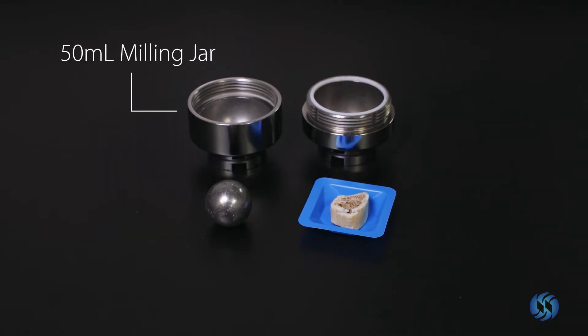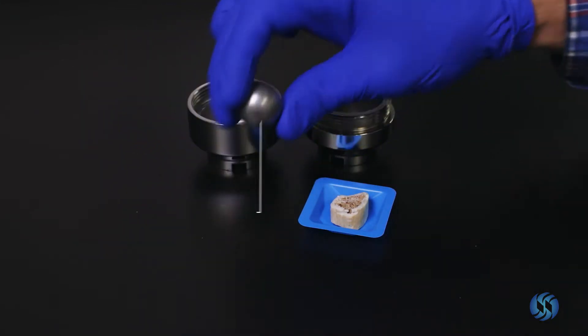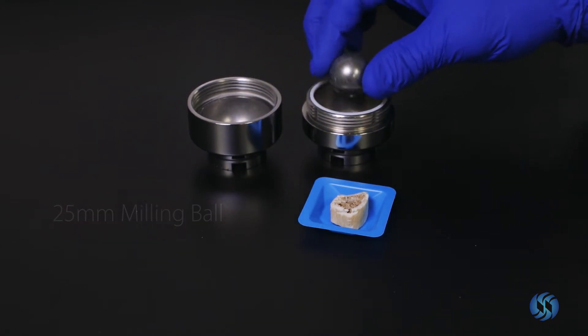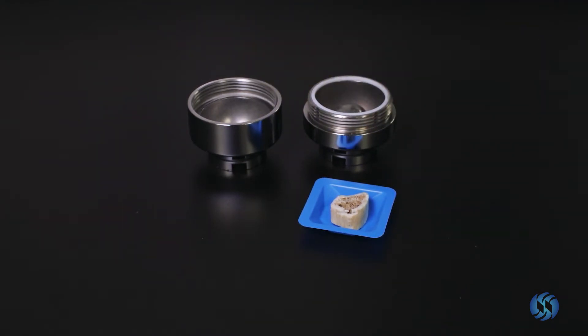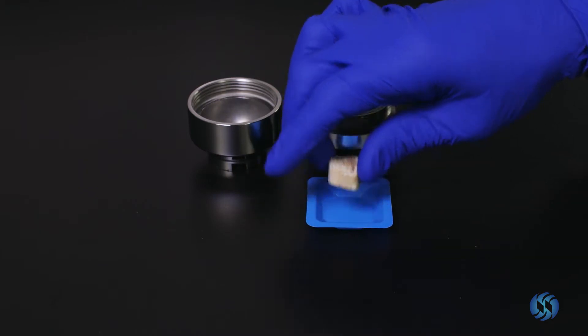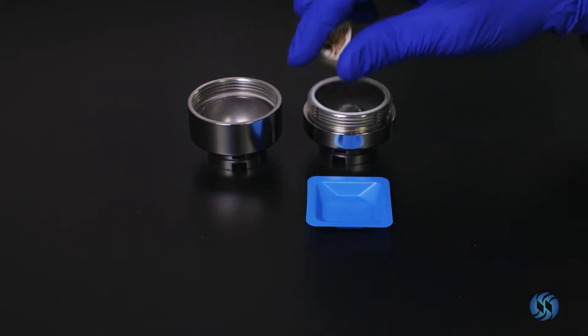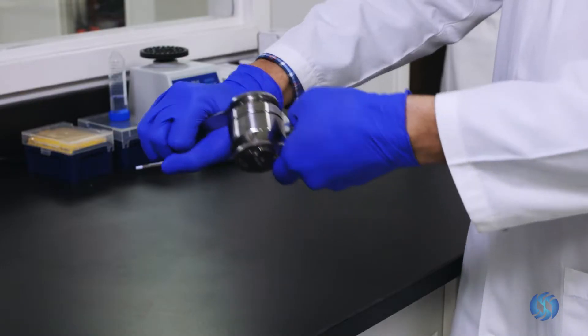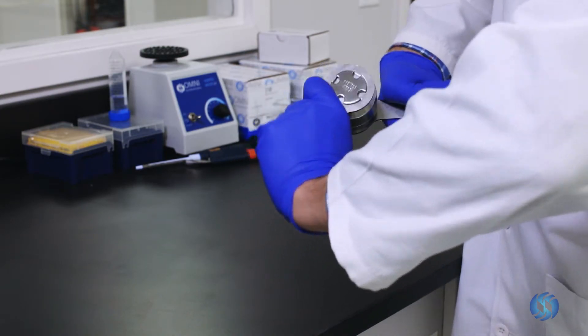Prepare a 50 milliliter stainless steel milling jar with a 25 millimeter milling ball. Place your bone sample into the milling jar. Ensure that the milling jar is tightly sealed before proceeding.